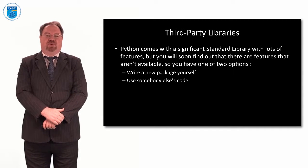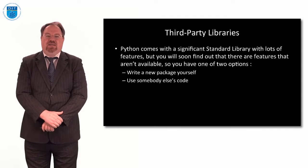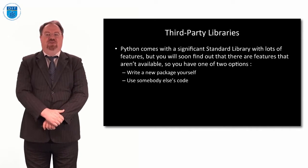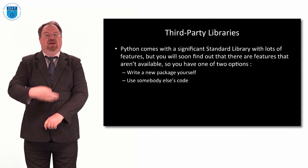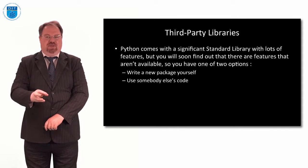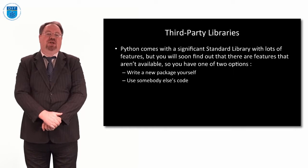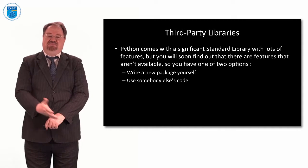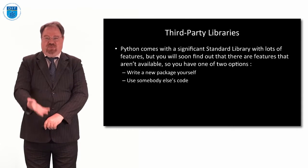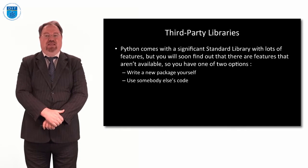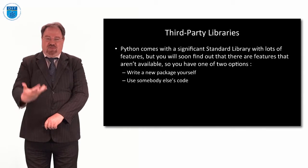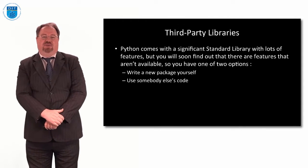Using other people's code is called software reuse. It's something we believe in a lot as computer scientists. It's very important because the more we reuse other people's code, the more we check that it's working. If we find an error, we let them know, they fix their code, and then lots of people can use really well-tested code. The more people who use a piece of code, the more likely it is to work well in all circumstances. Indeed, object reuse is one of the fundamental principles of object-oriented programming.